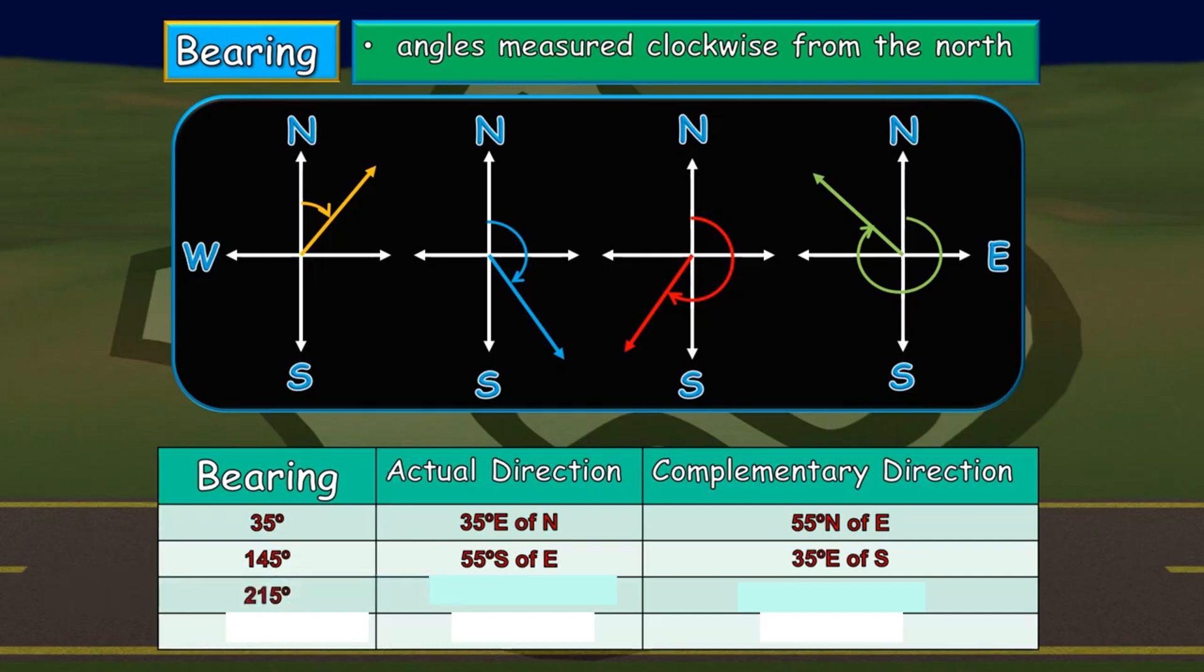Next, we have 215 degrees. Since 215 degrees is more than 90, and at the same time, it's already exceeded the angle measurement from the south, which is 180 degrees, we are going to subtract 215 with 180 degrees to determine the actual direction. 215 minus 180 degrees, we have 35 degrees west of south. Since, as we can notice on the third diagram, it is on quadrant number 3 wherein the direction involved is west and south, and since the arrowhead is pointing going to the west, it is west of south for the actual direction. For the complementary, it is still the same process. We just subtract the actual direction value to 90 degrees, so we have 55 degrees south of west.